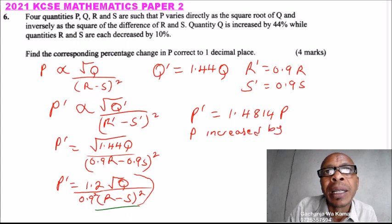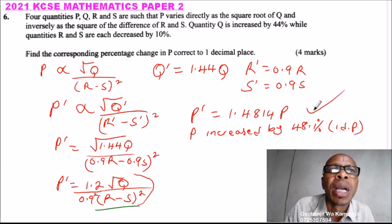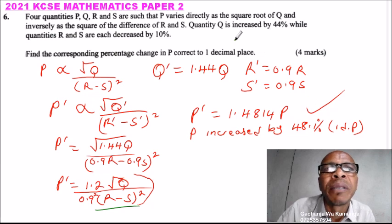P increased by 48.1 percent at one decimal place. So that's how you work out that question and you should be able to get full marks.